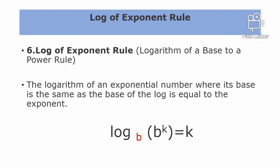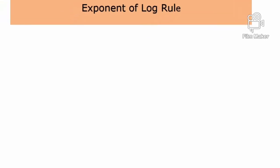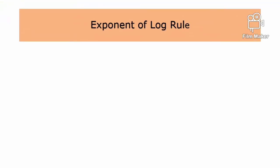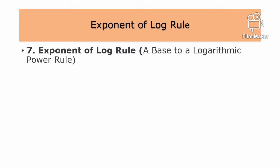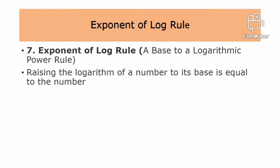The logarithm of an exponential number where the base of the log equals the base of the exponent results in the exponent itself. Example: Logarithm base b of b raised to t equals t. Also, b raised to the logarithm base b of k equals k.